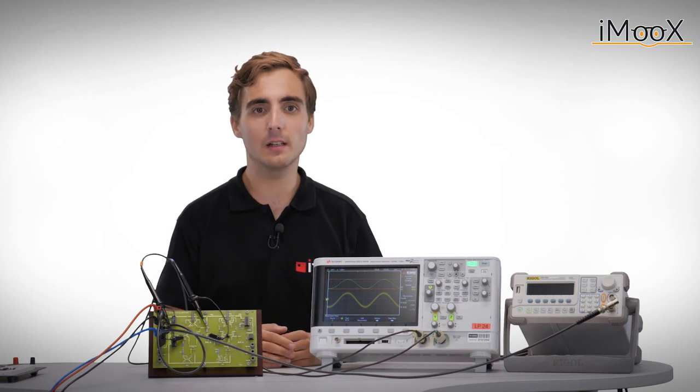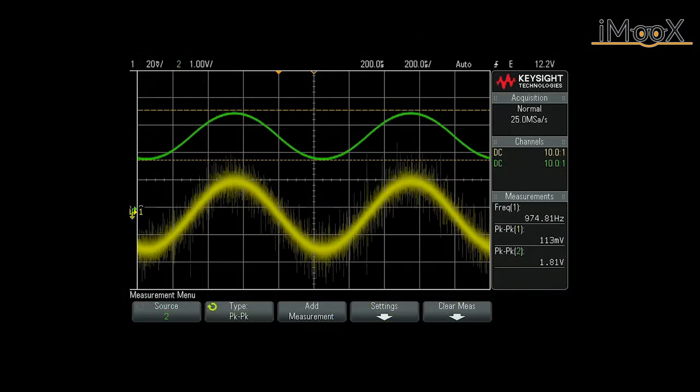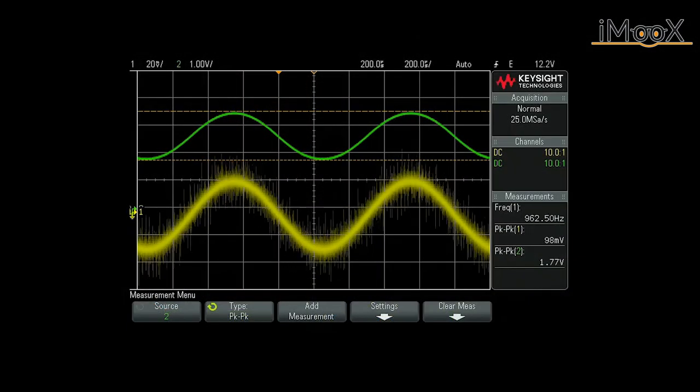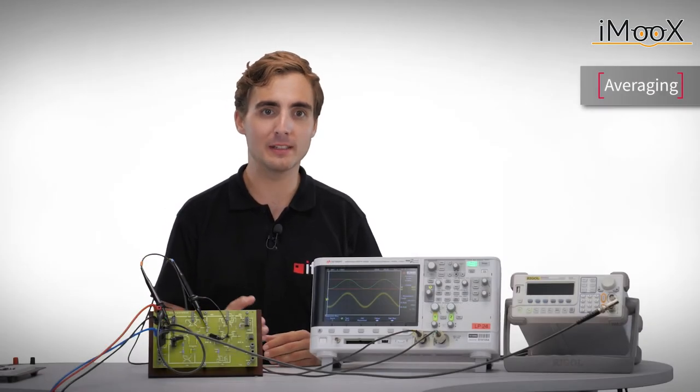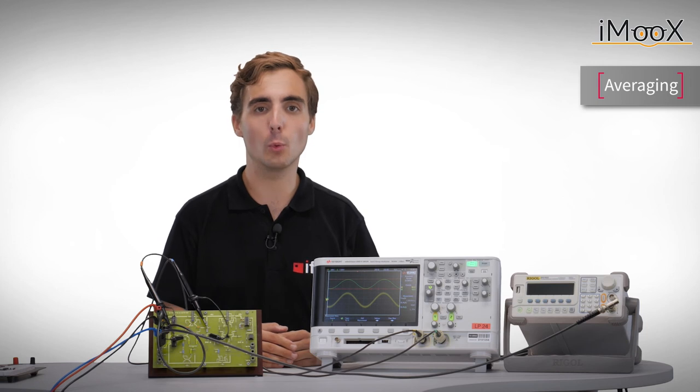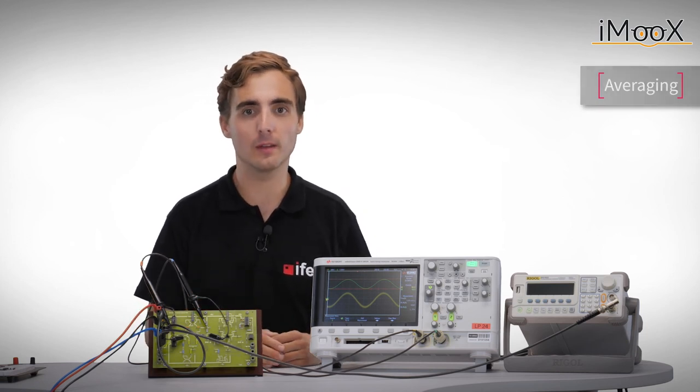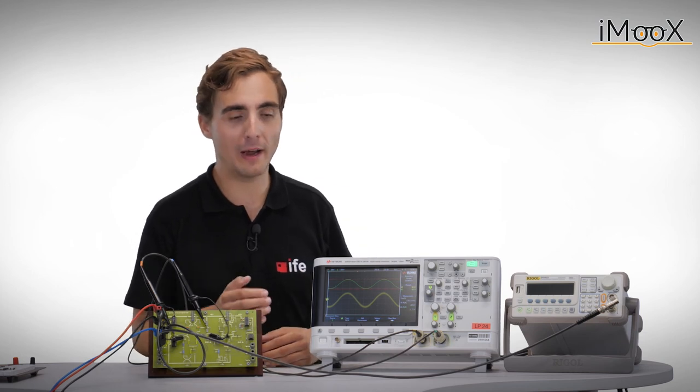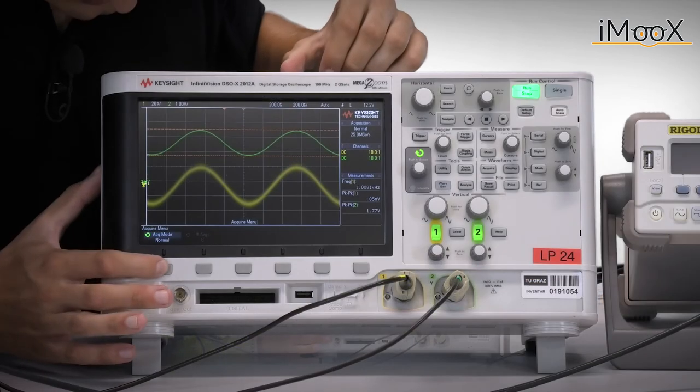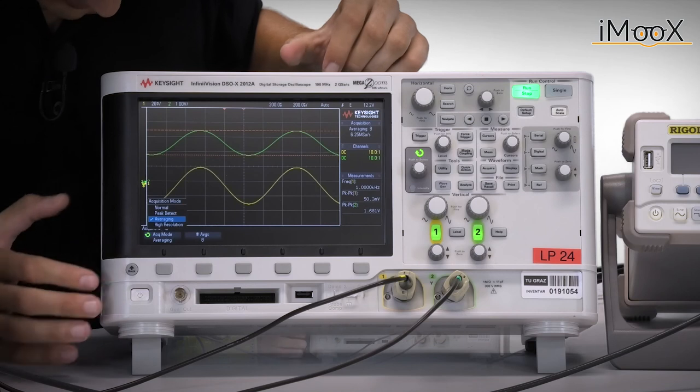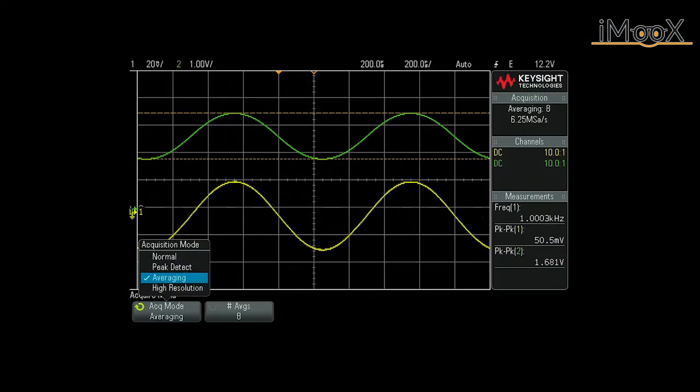However, you can see that due to the noise on channel 1, the measurements are quite inaccurate. To reduce this effect, we can average our signal over some periods, which gives us a noise-free signal. In this way, our amplitude measurement becomes quite accurate. To do so, we have to go to the Acquire menu and select Averaging in the Acquire mode.